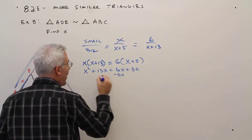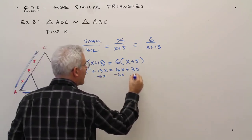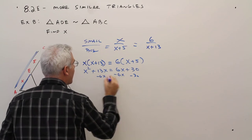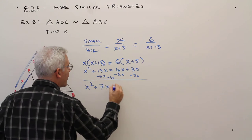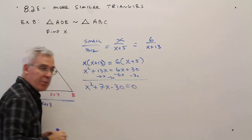Let's subtract 6X, subtract 30, and get X squared plus 7X minus 30 equals zero.